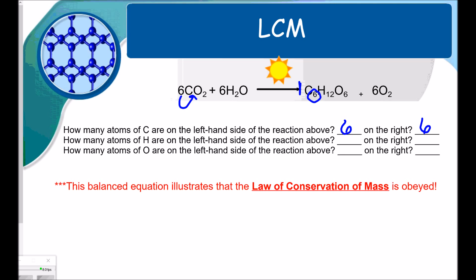How many atoms of hydrogen are on the left-hand side of the reaction above and on the right? Remember, the left side is called the reactant side, and the right side is called the product side. So we're looking for hydrogen. I've got 6 times 2, which would give me 12 on the reactant side. On the product side, I've got 1 times 12, which gives me 12 on that product side.